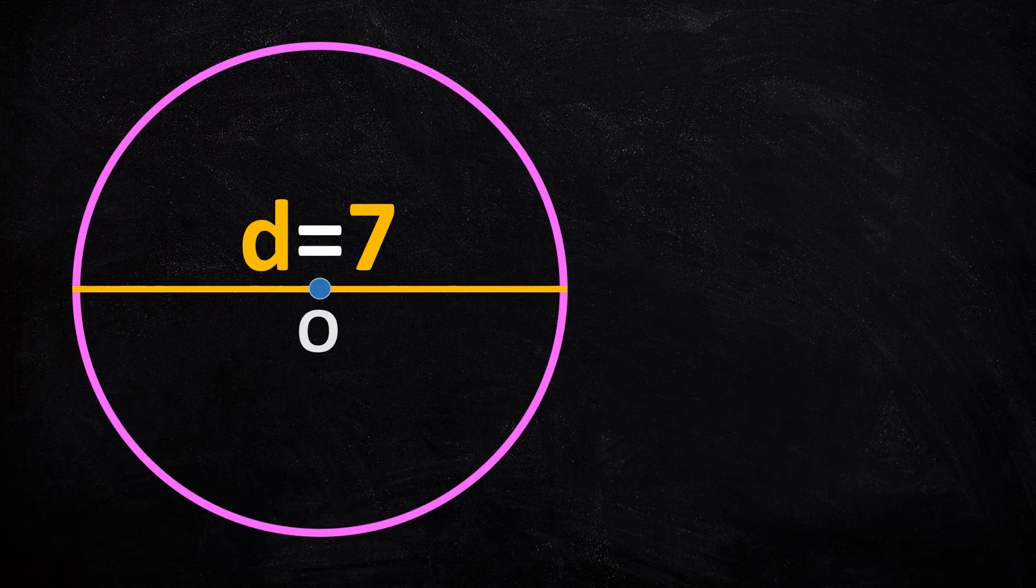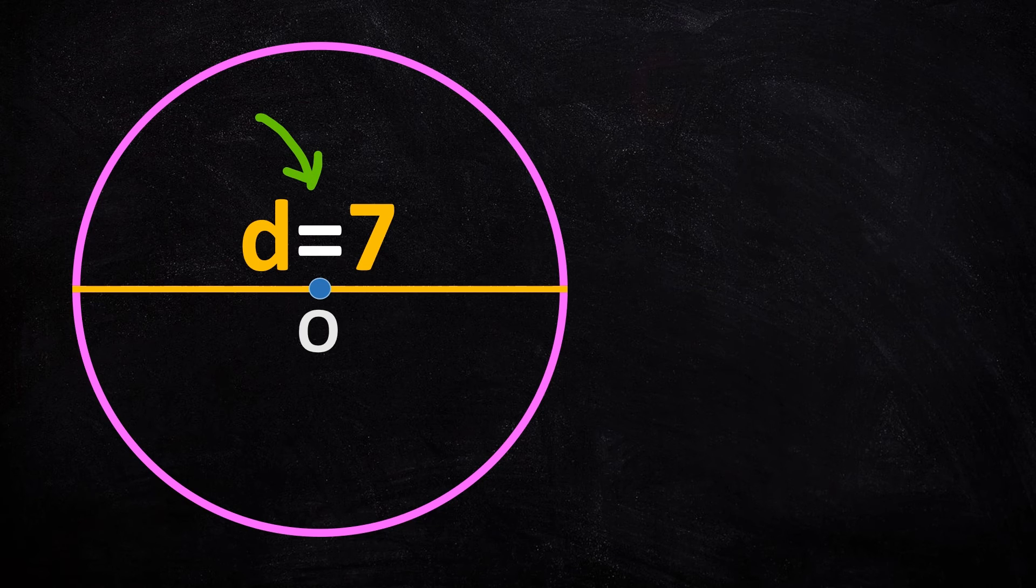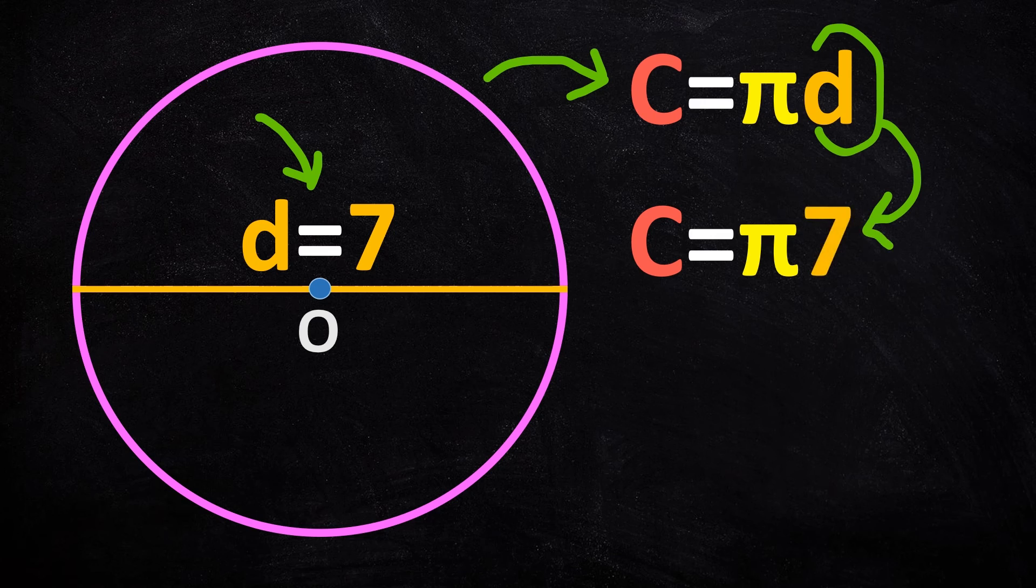Now, let's use this new piece of information to find the circumference of this circle. We know the diameter is 7. And we also know the formula that uses the diameter. Which is, circumference equals pi times the diameter. Let's replace d with 7. We get the circumference equals 7 pi. And that was too easy indeed.